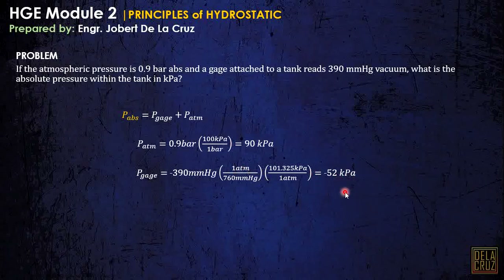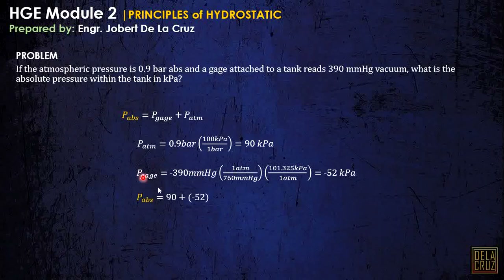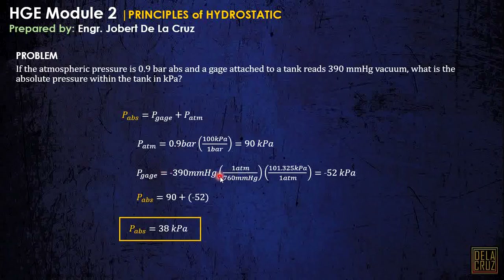By direct substitution of gauge pressure plus atmospheric pressure, we get the absolute pressure. Note that if it is vacuum, the pressure is negative. You can also derive this using the principle of pressure head — that is, the 390 mm of mercury is just the pressure head — but the exact conversion factor method is more precise.